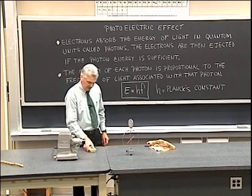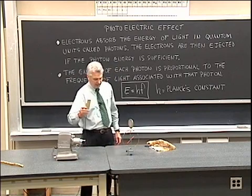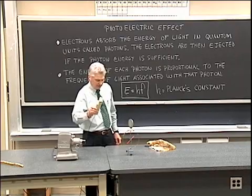It appears that visible light does not have sufficient energy to eject those electrons. Now let's try some ultraviolet light. Here I have a source of ultraviolet light, I'm going to shine that ultraviolet light onto the zinc plate and let's observe what happens.